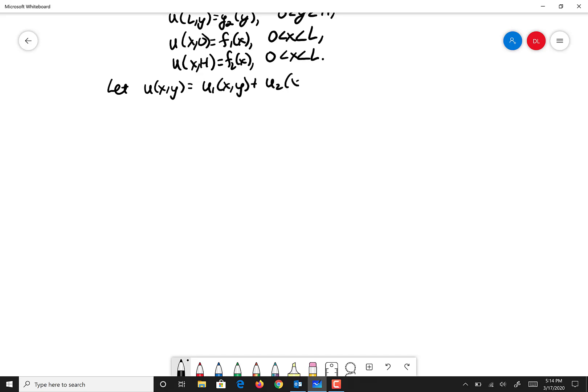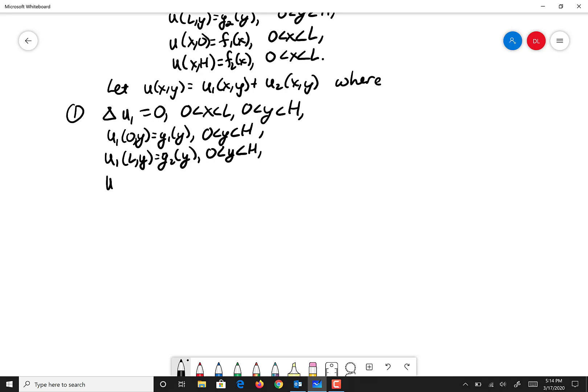Each one of them solves a variant on the equation. So u1, although order doesn't count, we said satisfied homogeneous boundary conditions on the y boundary. So we had these boundary conditions for the x boundary, and then we had u sub 1 of x, 0 equals u sub 1 of x, H equals 0.